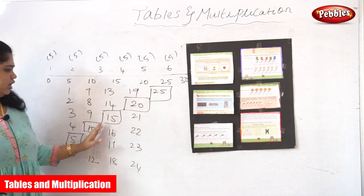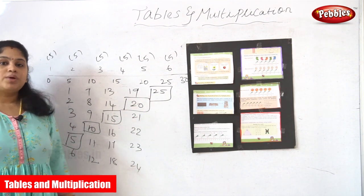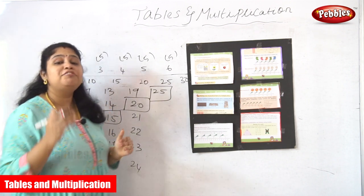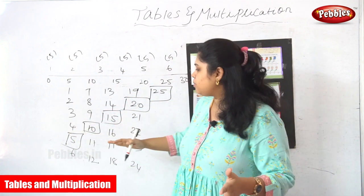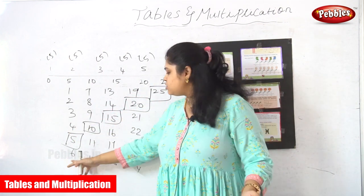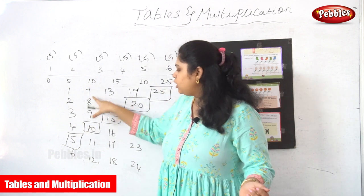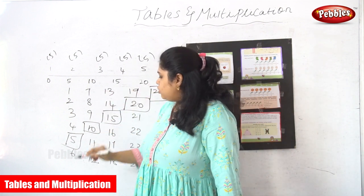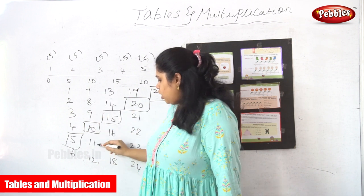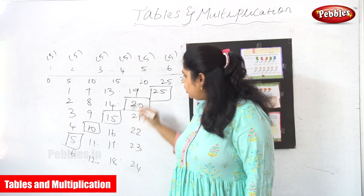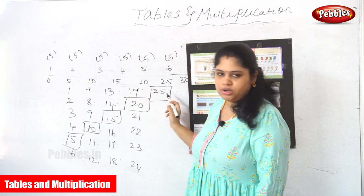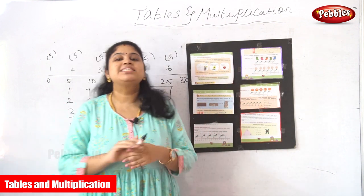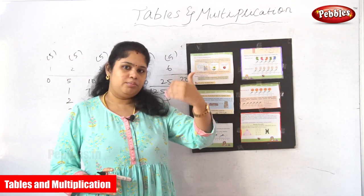We take five, ten, fifteen, twenty, and twenty-five. This is skip counting by five — we skip by five each time, avoiding the in-between numbers, and taking only every fifth number: one, two, three, four — fifth number; one, two, three, four — fifth number. We just take the fifth number each time and avoid all the ones before it.